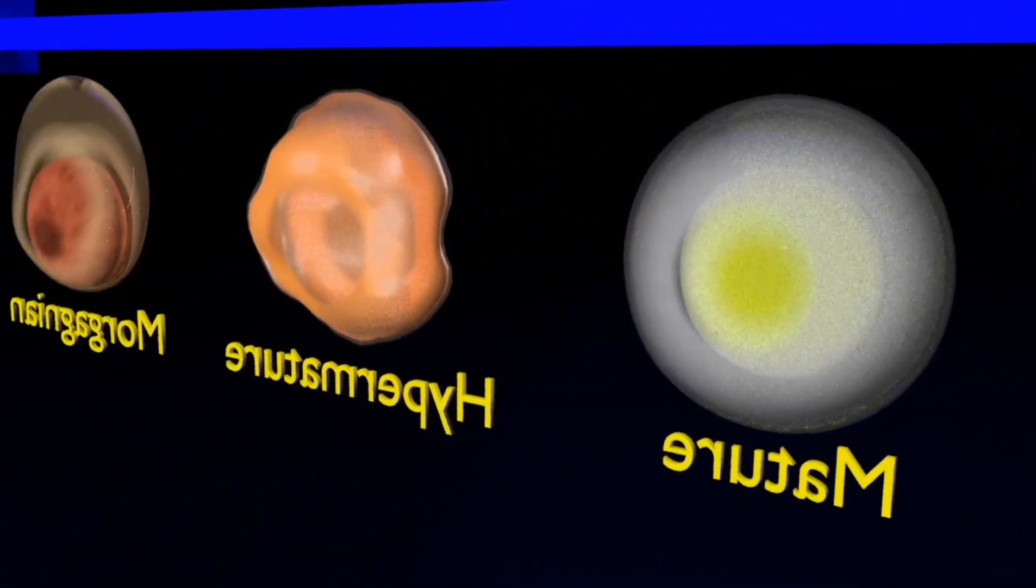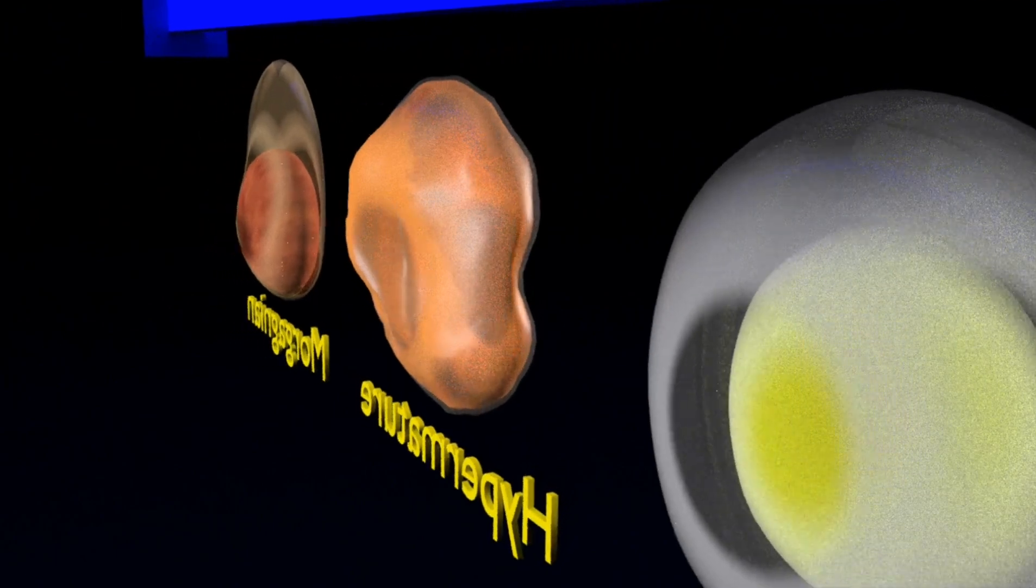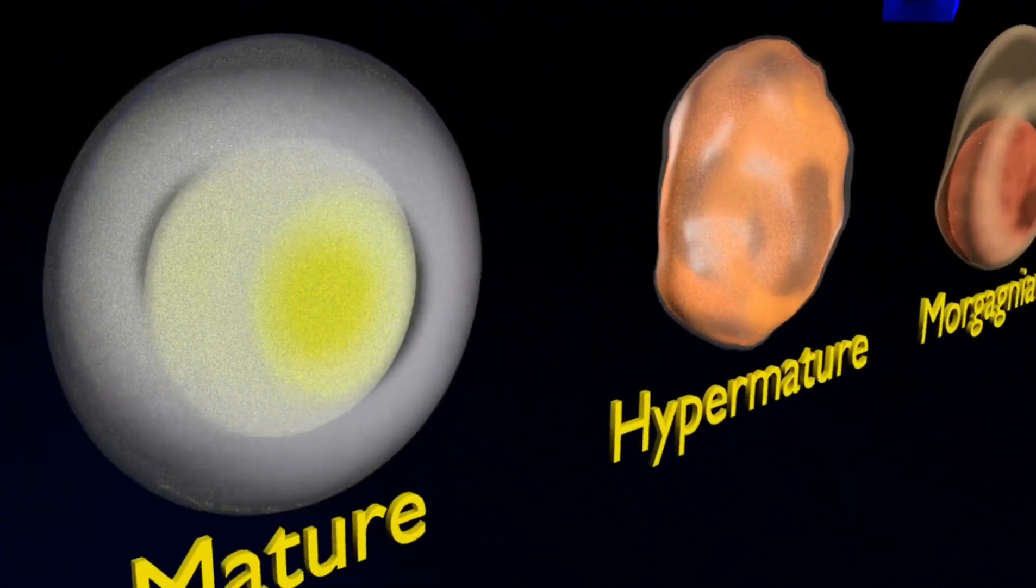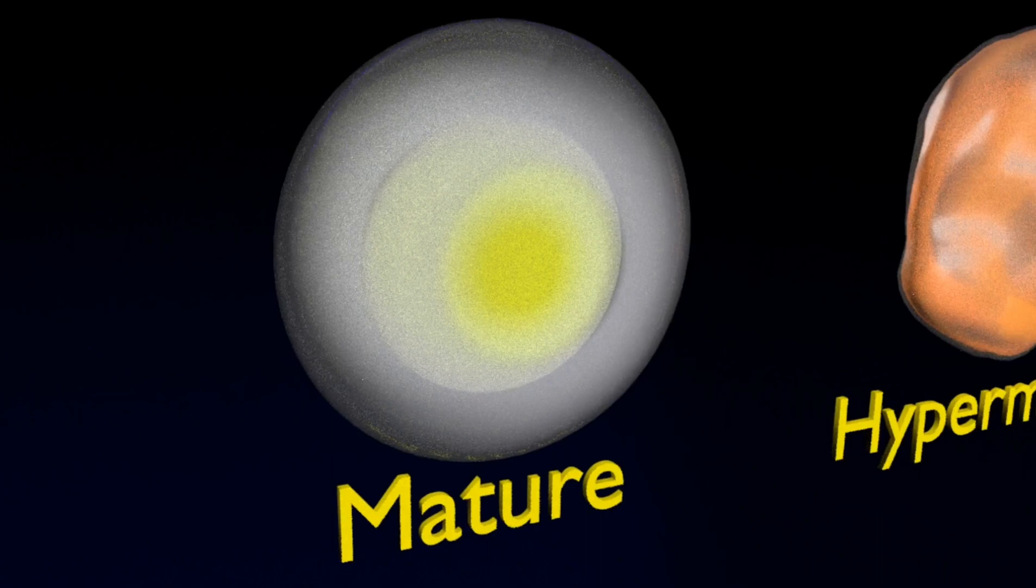The mature cataract: Opaqueness has increased to such a point that it can appear milky white or amber in color.